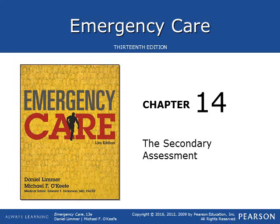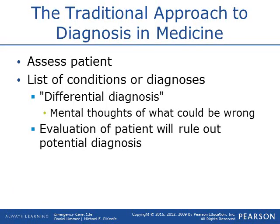This section of chapter 14 is going to cover the secondary assessment. The traditional approach to forming a diagnosis or field diagnosis on a patient is done through differential diagnosis. This means you develop a mental thought of potentially what could be wrong with the patient based on their signs and symptoms. Once you have those potential reasons, as you take vital signs and do interventions, you can begin to rule things out.